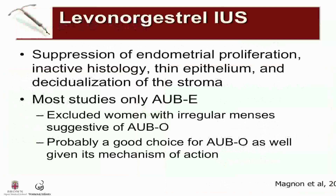The first treatment to discuss is the levonorgestrel intrauterine system. It releases 20 micrograms of levonorgestrel daily for five years. It causes suppression of endometrial proliferation and inactive histology, thin epithelium, and decidualization of the stroma — overall, suppression of endometrial proliferation, which is thought to be why it works. Most studies on the levonorgestrel intrauterine system are only for AUB-E — patients with heavy and regular bleeding. They excluded women with irregular menses suggestive of AUB-O, although given its mechanism of action, it's probably a good choice for AUB-O as well.